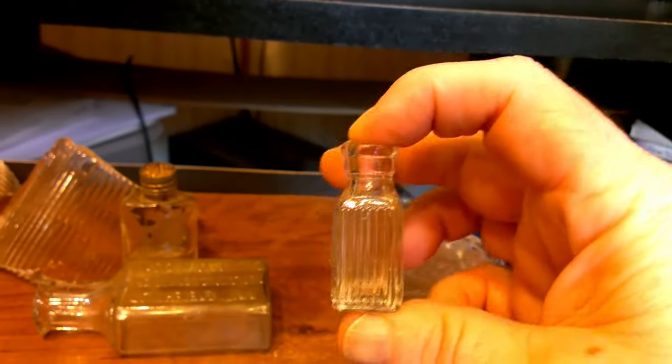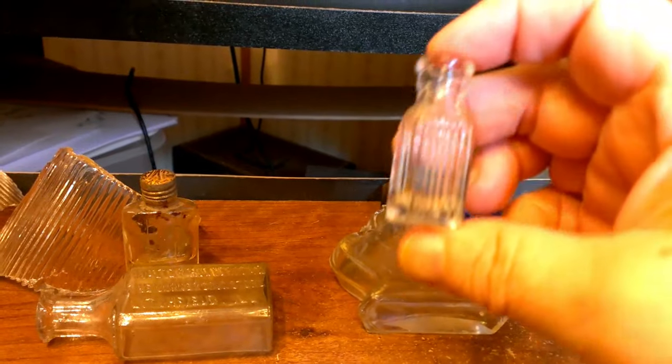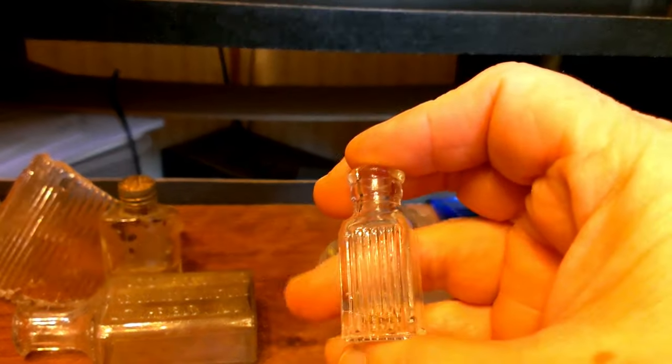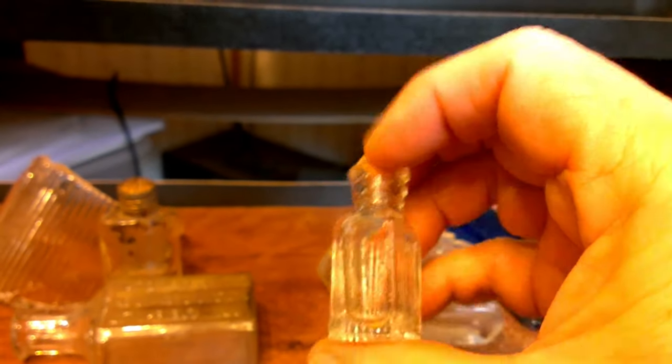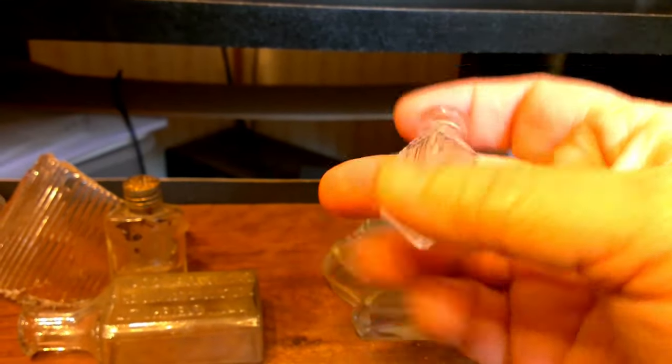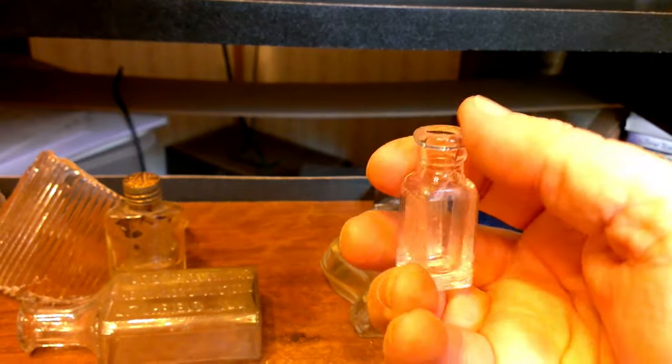Here's a teeny tiny little bottle. Probably maybe an inch and a half tall. Has a nice little pattern around it. Ribbed pattern on three sides and one smooth side where probably a label would have been. On the bottom it says Q-Tex. Cork top.